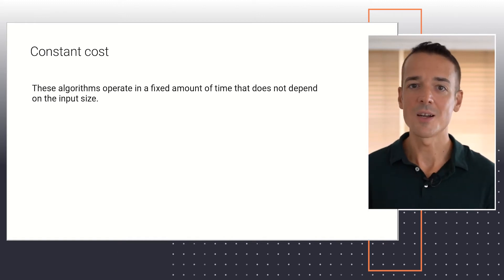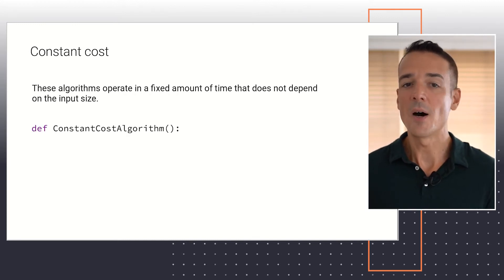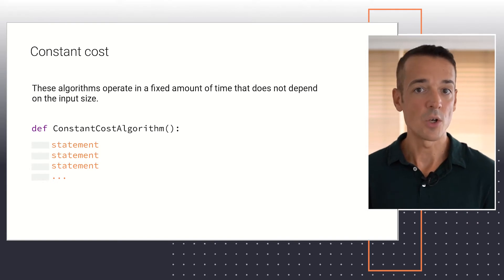If we write a Python code for a constant cost algorithm and place it inside of a function, the body of that function is typically characterized by a set of sequential statements with no loops in them. These statements may optionally include conditional execution.